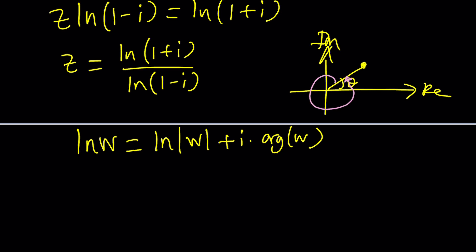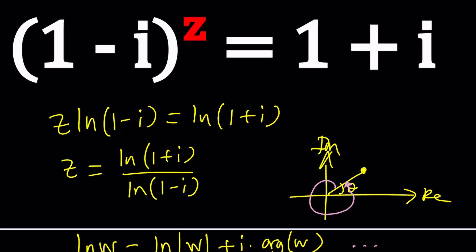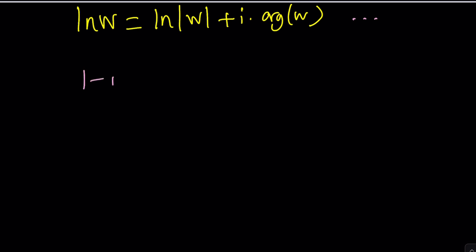But yeah, you can proceed with that and find the result. But let's go ahead and use a slightly different approach which gives us pretty much the same thing. Let's go ahead and do this. We have 1 minus i to the power z equals 1 plus i.